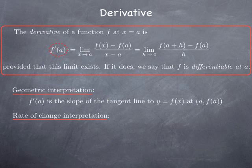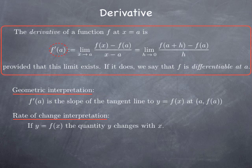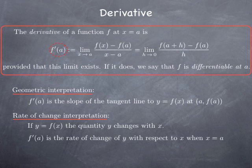Another possible interpretation is in terms of rate of change. If y is a function of x, then we can think of the quantity y as changing with the quantity x. The average rate of change of y with respect to x over an interval from a to b would be f(b) minus f(a) over b minus a — the change in y divided by the change in x. If we want an instantaneous rate of change, we pass to the limit and obtain the derivative. In other words, f prime of a is the rate of change of y with respect to x when x equals a.